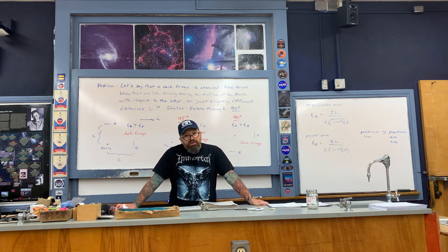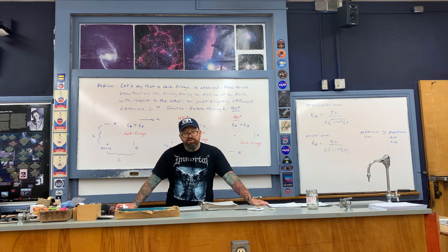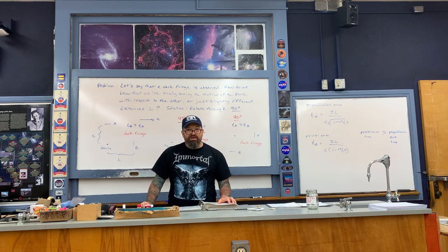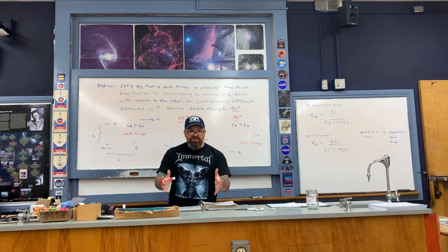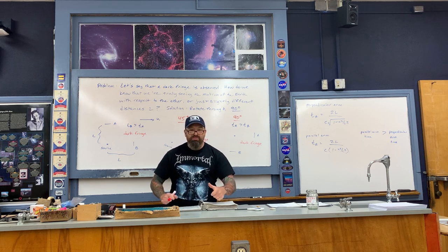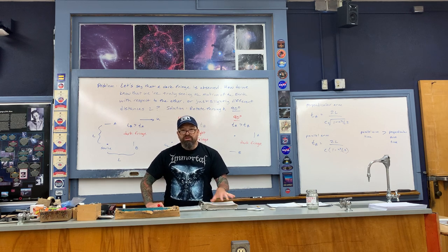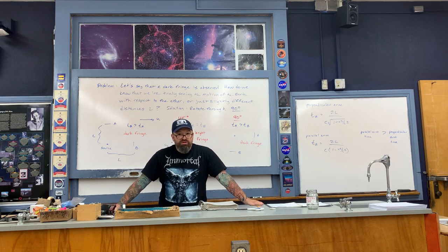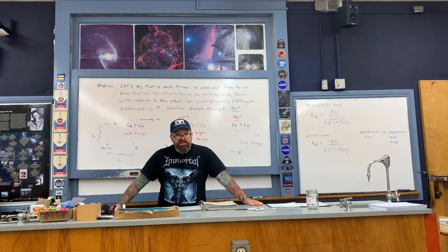They also stabilized the interferometer so it wouldn't be affected by the vibrations of their footsteps inside the laboratory. What they actually did was take the entire interferometer, place it onto an enormous slab of sandstone, and then rotate it through a 90-degree angle while it was floating on a pool of mercury. I've posted a picture of the actual experimental setup from 1887 in today's folder — I invite you to take a look at that.